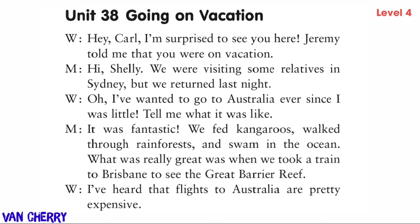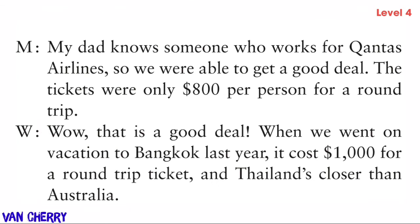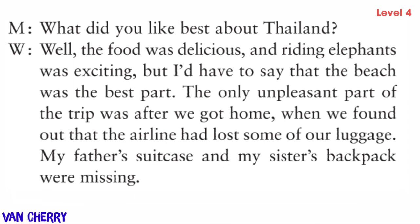What was really great was when we took a train to Brisbane to see the Great Barrier Reef. I've heard that flights to Australia are pretty expensive. My dad knows someone who works for Qantas Airlines, so we were able to get a good deal — the tickets were only eight hundred dollars per person for a round trip. Wow, that is a good deal! When we went to Bangkok last year, it cost one thousand dollars for a round trip ticket, and Thailand is closer than Australia.